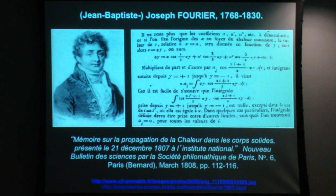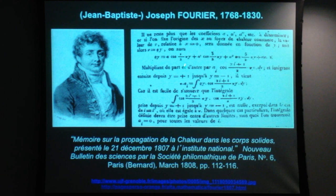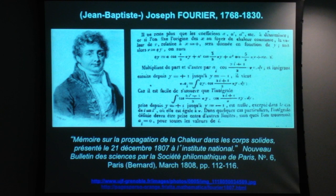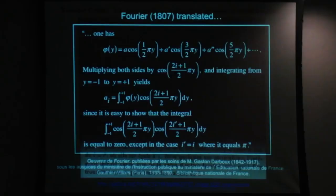Here's a picture of Fourier and a piece of text from his first report of this series representation—a memoir on the propagation of heat in solid bodies, 1807, presented in Paris. Even if you don't read French, you can see we're talking about a cosine series: a times cosine(½πy), a-prime times cosine(3/2 πy), five-halves, and so on indefinitely. He was able to show that the coefficients a, a-prime, a-double-prime, and so on, were deducible based on the properties of the cosine and sine functions.